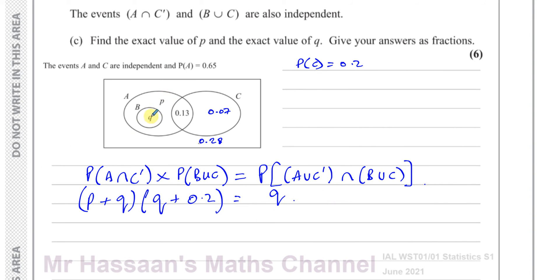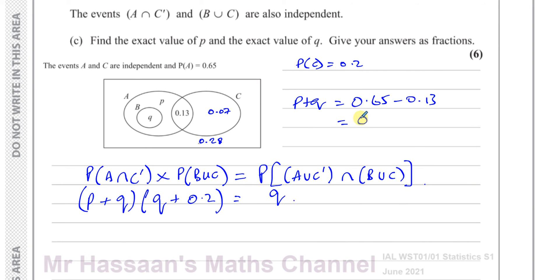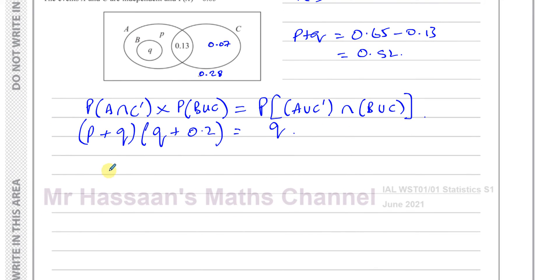We know P + Q = 0.65 − 0.13 = 0.52, since A ∩ C' is the part of A outside C. So we have: 0.52 × (Q + 0.2) = Q.